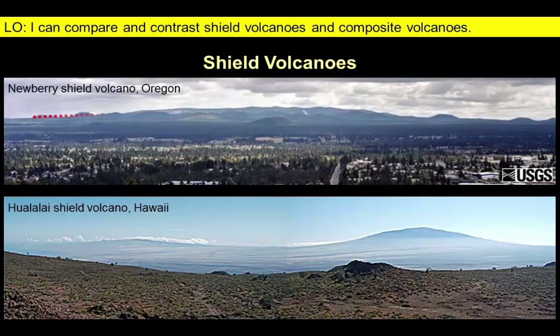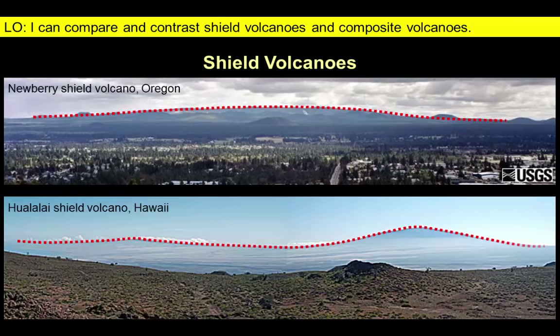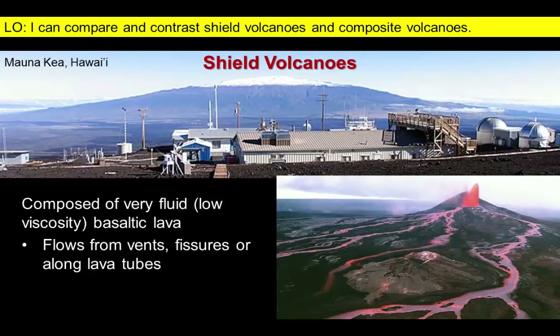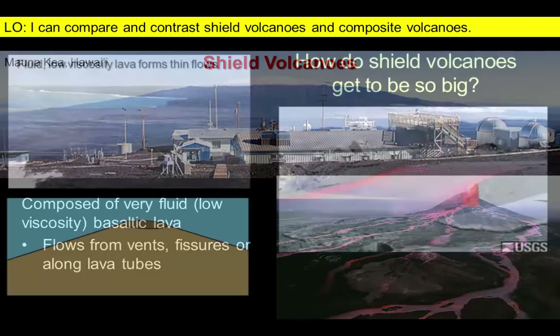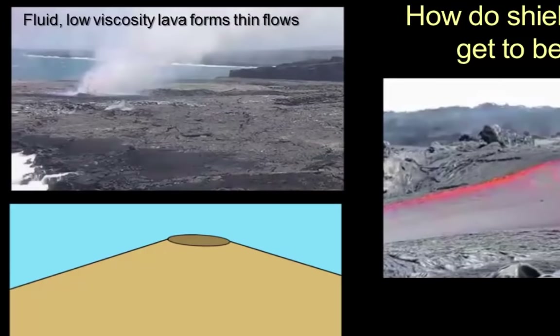We'll describe shield volcanoes first. Shield volcanoes have a distinctive low angle profile that forms broad triangular landforms that are thought to resemble an overturned warrior shield. These volcanoes are built up by series of lava flows that can emerge from vents or from networks of fissures or deep cracks along the volcano's flanks.